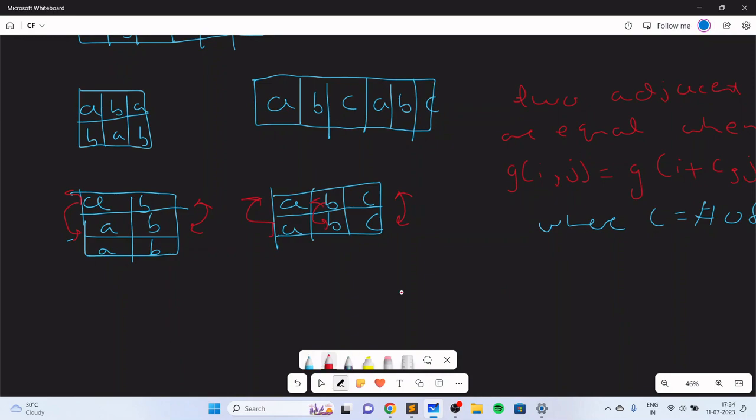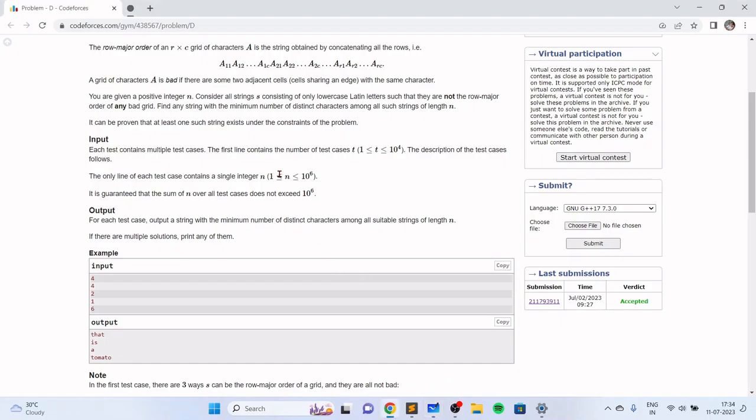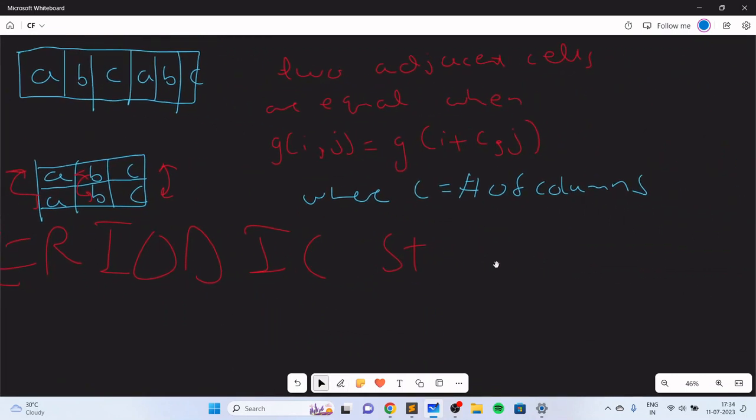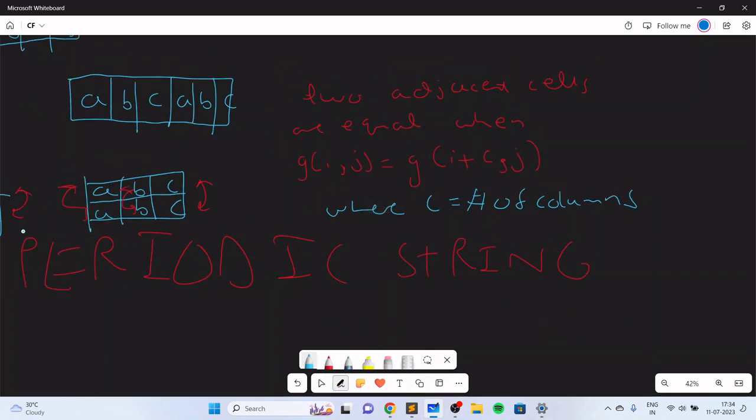If you want to construct a string of length 10^6, you want to have a periodic string. This is another big idea - the idea of a periodic string where the string should repeat. It can't be something random because you want to make sure there's some pattern so you can print it for large values of n.